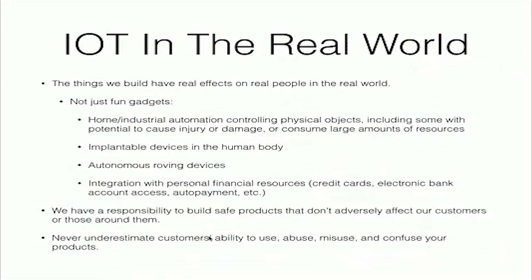IoT in the real world — the things we build have real effects on real people in the real world. It's not just fun gadgets. We have home and industrial automation controlling physical objects, including some with potential to cause injury, damage, or consume large amounts of resources and release large amounts of energy. We also have implantable devices in the human body, autonomous roving devices or robots, and a lot of integration with personal financial resources like credit cards, electronic bank account access, and automatic payments. We have a responsibility to build safe products. And never underestimate your customer's ability to use, abuse, misuse, and confuse your products.